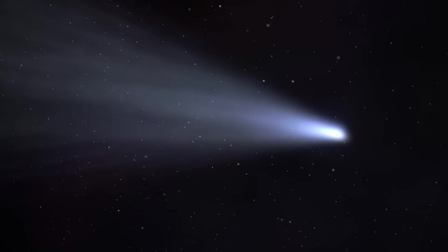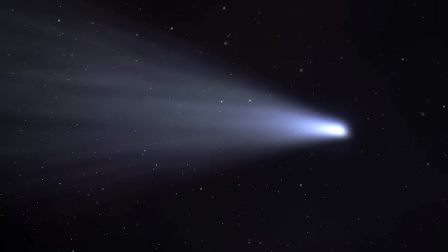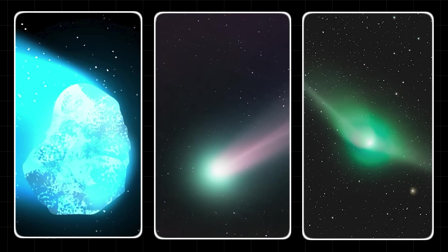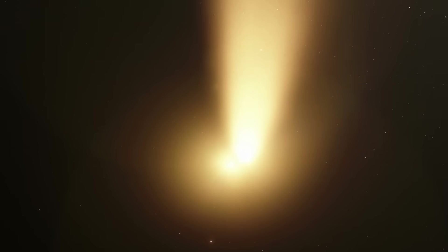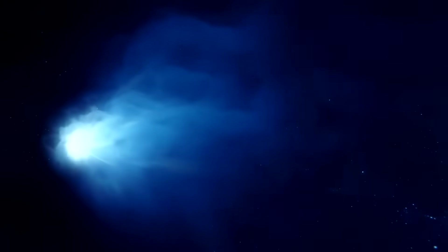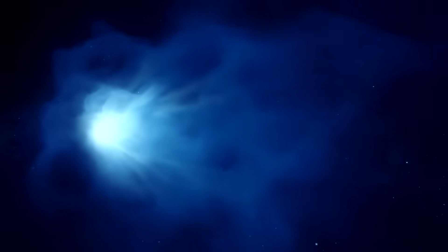The thing nobody tells you is that comets are essentially dirty snowballs. They're made of ice, dust, and frozen gases. As they approach the Sun, the ice sublimates, turning directly into gas, creating a glowing coma and a spectacular tail. This process is usually gradual, a gentle release of material.